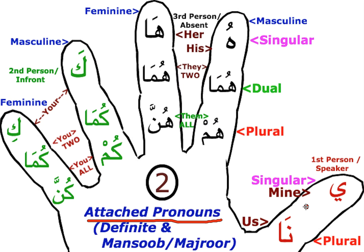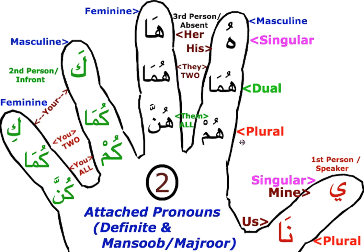We are already aware that the index finger represents the third person absent masculine, the middle finger represents third person feminine, the ring finger represents second person masculine, the little finger represents second person feminine, and the thumb represents the first person — the person speaking. The first bone represents singular, the second bone represents dual, and the third bone represents plural — three or more people.